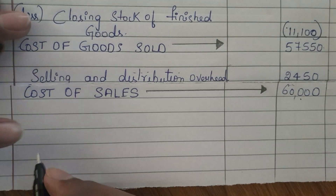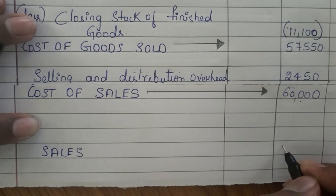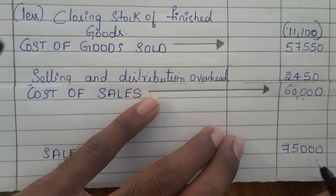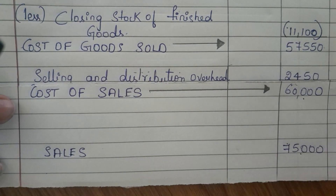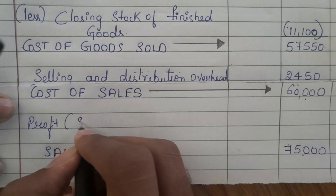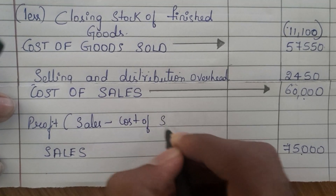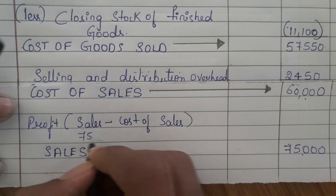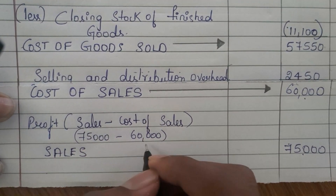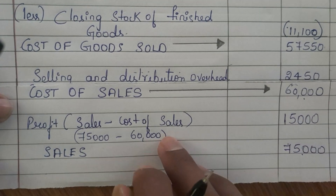Now we know cost of sales, and the question has also given us the value of sales, which is 75,000. It is now easy to calculate profit. The formula is: profit equals sales minus cost of sales. Sales value is 75,000 and cost of sales is 60,000. So 75,000 minus 60,000 gives us 15,000. Therefore, 15,000 is the profit.